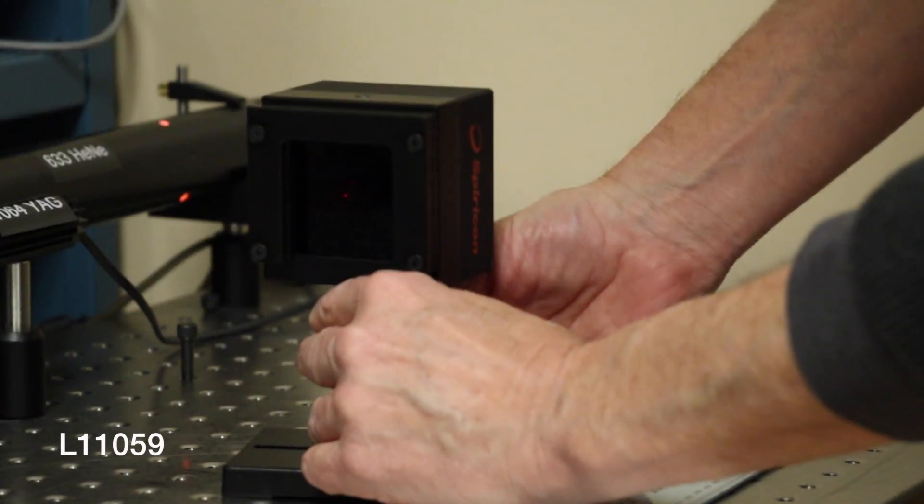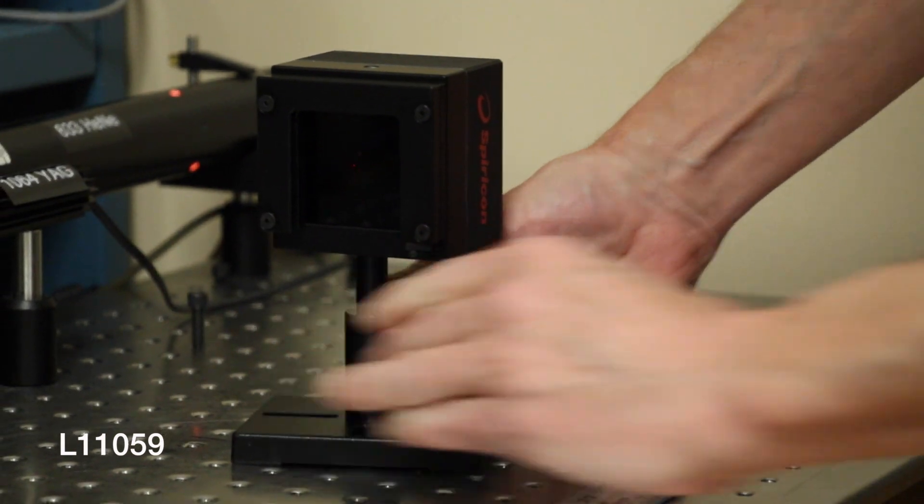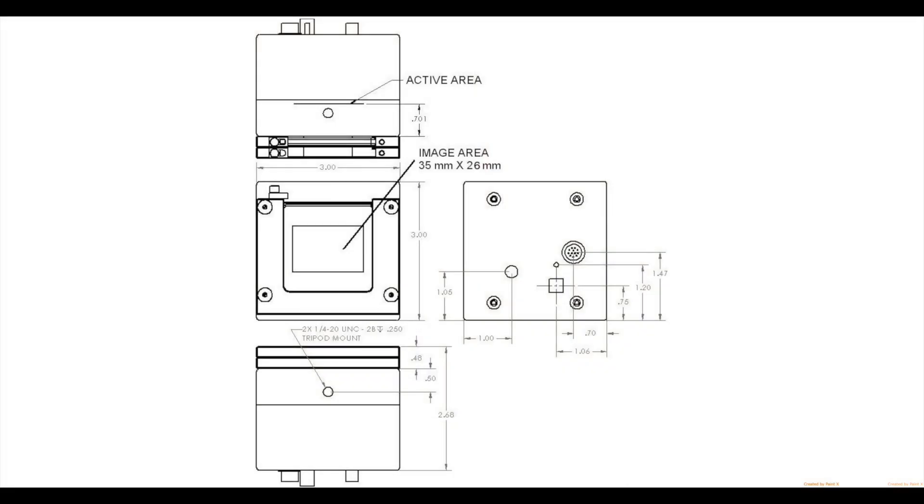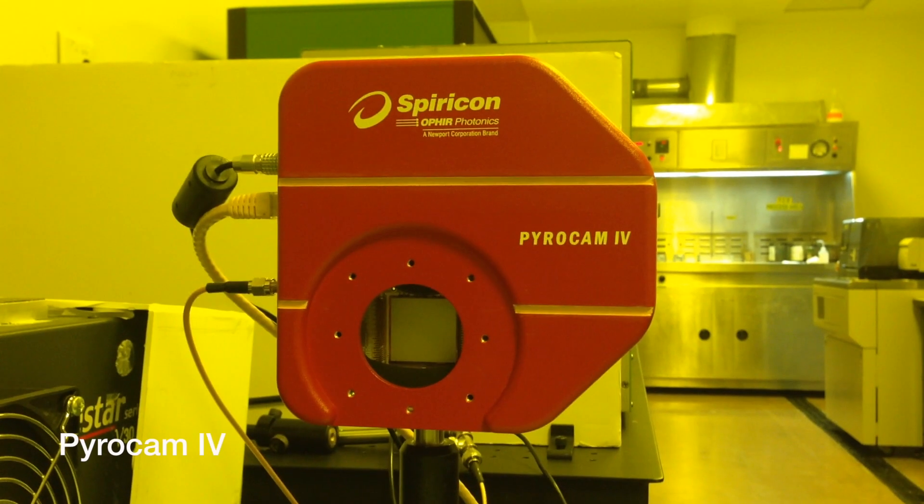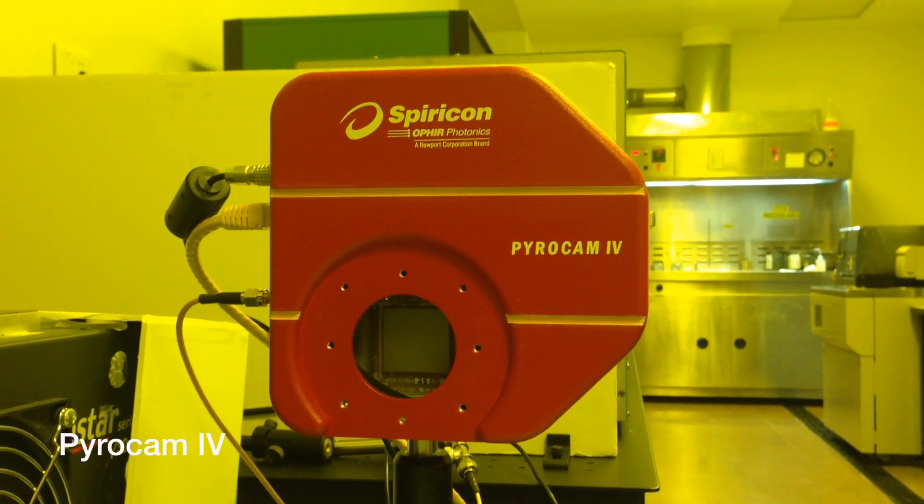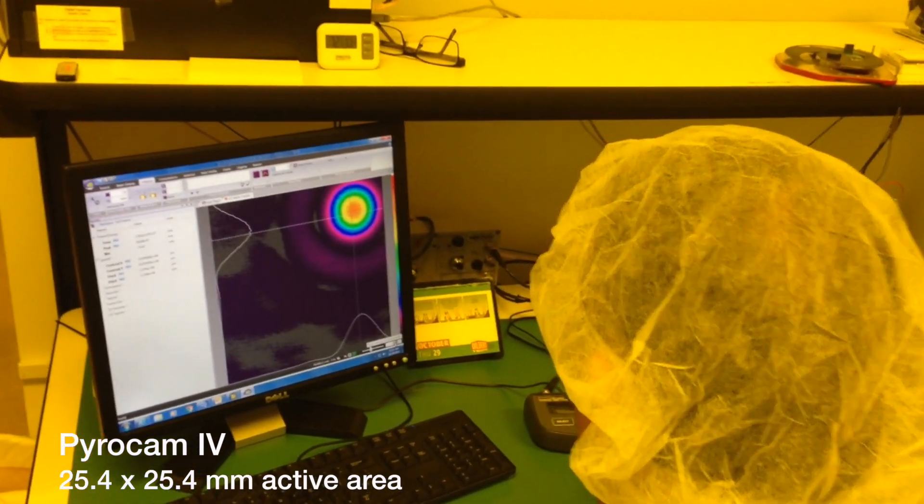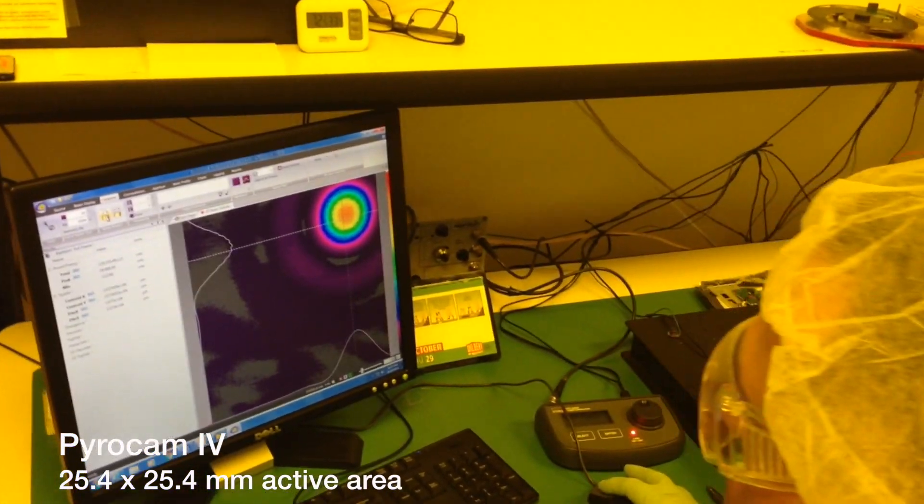Ophir Spiricon offers the L11059 camera, which features a 34 mm by 26 mm active area, and the PyroCam 4 pyroelectric camera, which provides a 25.4 by 25.4 mm active area.